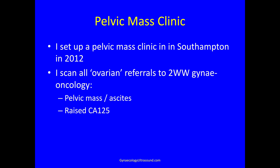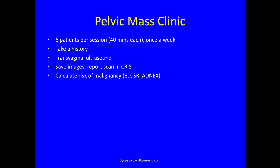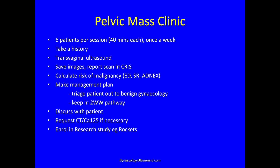I set up a pelvic mass clinic in Southampton in 2012 and scan all the ovarian referrals to the two-week wait pathway — patients with a pelvic mass, ascites, or a raised CA125. All my scans use IOTA language and IOTA risk models. I have about six patients per session of 40 minutes each, during which I take a history, perform transvaginal ultrasound, save images, report the scan in CRIS, calculate risk of malignancy using easy descriptors, simple rules, or ADNEX, and make a management plan. I triage patients with a benign lesion to benign gynaecology, and keep patients with uncertain or malignant features on the two-week wait pathway, requesting CT and CA125 if necessary.